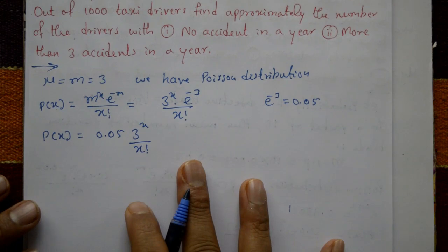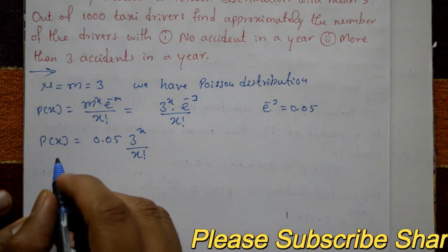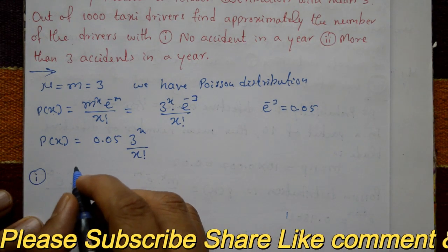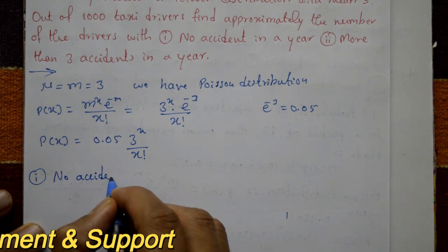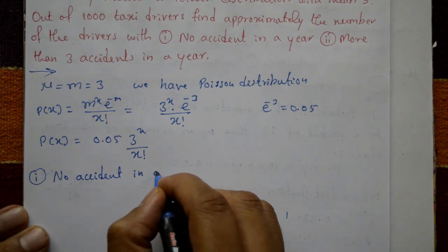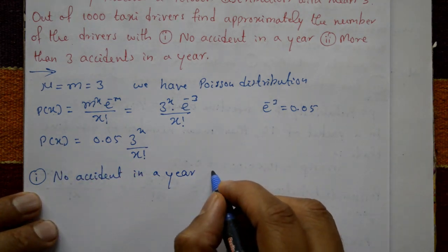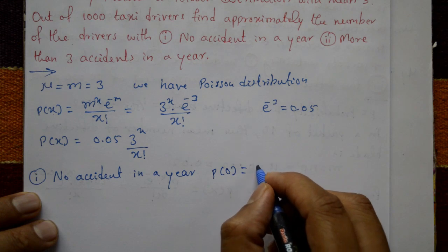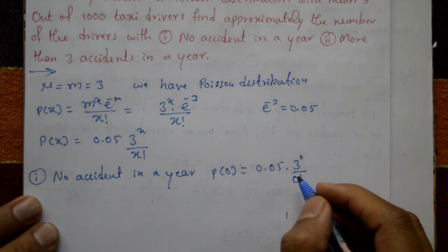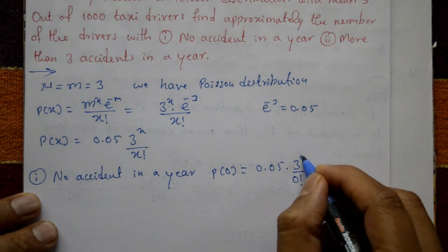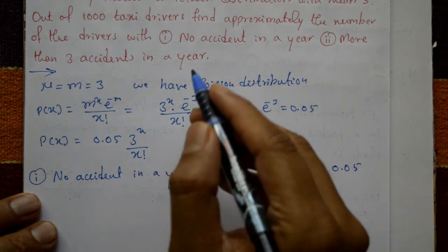Case one: no accident in a year. No accident means x equals zero. P(0) equals 0.05 multiplied by three raised to zero, divided by zero factorial. Three raised to zero equals one, and zero factorial is also one, so P(0) equals 0.05.